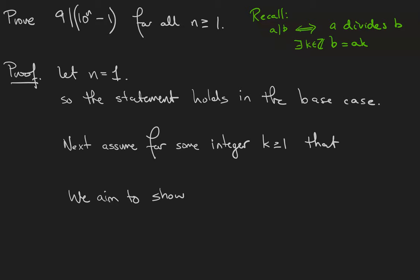The first few lines of the proof are going to look very similar if you watched the video for our last proof by induction. Let n equal 1. 10 to the 1 minus 1 is equal to 9, and 9 divides 9, so the statement holds true in the base case.